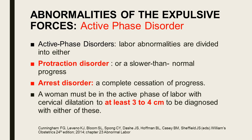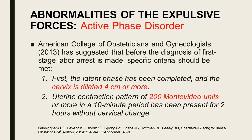For active phase disorders, labor abnormalities are divided into protraction disorder — slower-than-normal progress — and arrest disorder, which is complete cessation of progress. A woman must be in the active phase with cervical dilatation of at least 3–4 cm to be diagnosed with either. ACOG suggests that before diagnosing first-stage labor arrest, specific criteria must be met: the latent phase has been completed and the cervix is dilated 4 cm or more, and a uterine contraction pattern of 200 Montevideo units or more in a 10-minute period has been present for 2 hours without cervical change.